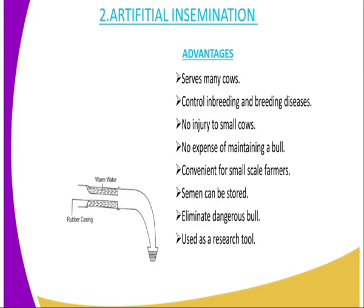What are the advantages of artificial insemination? First, it serves many cows — sperm from one superior bull can be used to serve many cows, transmitting high qualities to the resulting offspring. Then it helps in controlling breeding diseases and inbreeding because there is no direct mating. Also, there is no injury of small animals since there is no bull mounting on the cow.